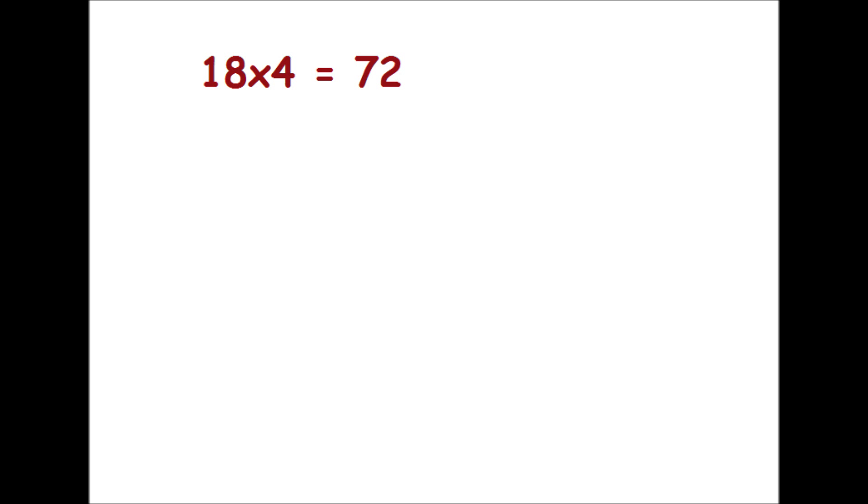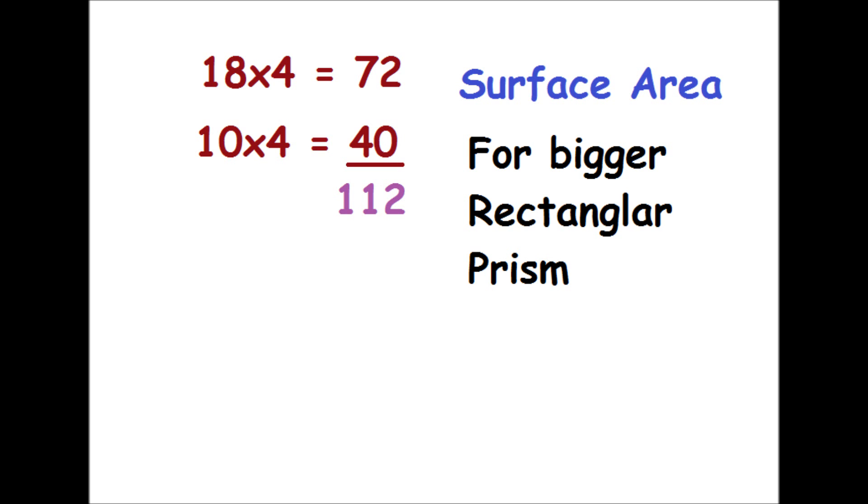To calculate the surface area of my rectangular prism, it's 8 times 4, which is 72, and 10 times 4, which is 40. When you add 72 and 40, it would be 112, and that would be the surface area.